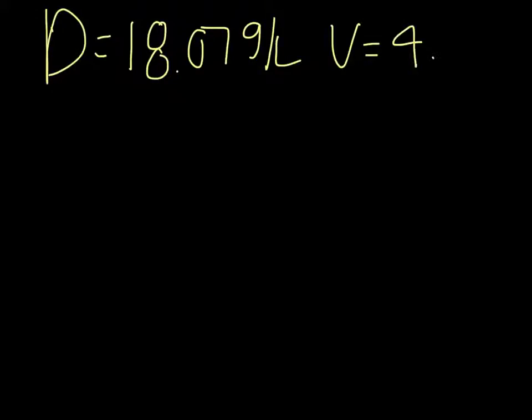Alright here's example two. Find the mass of a metal in kilograms with a density of 18.07 grams per liter and a volume of 4.87 liters. The equation we will be using is m equals vd because we have volume and density but we're trying to find mass.